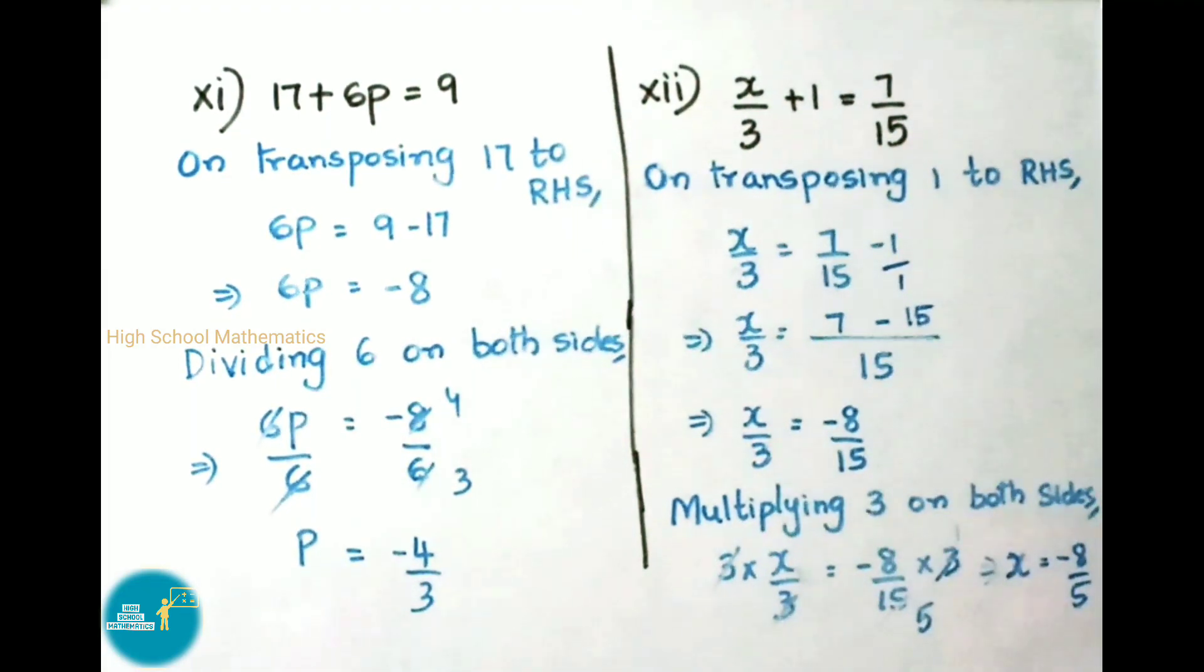Here 3 is dividing. To remove it, we multiply 3 on both sides. 3 × x/3 = -8/15 × 3. Here 3 and 3 cancel. 3 × 3 = 9, 3 × 5 = 15. So x = -8 × 1 = -8, over denominator 5. Therefore x = -8/5.